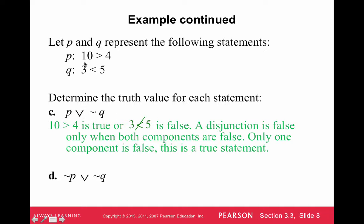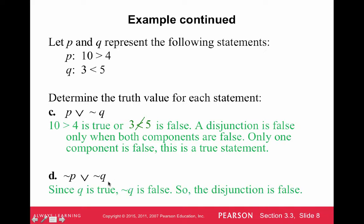Here we have a true statement and a true statement, so the negation of both would be false. So ¬P ∨ ¬Q is false ∨ false, which makes this statement false. Since P is true, ¬P is false; and since Q is true, ¬Q is false — so the disjunction is false since both components are false.